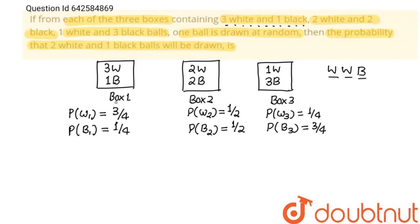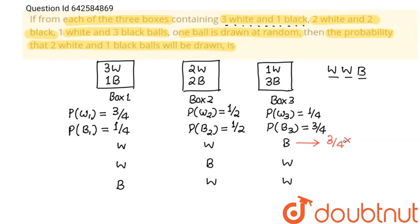We need two white balls and one black ball, so there are three possible cases: white from box one, white from box two, and black from box three; or white from box one, black from box two, and white from box three; or black from box one, white from box two, and white from box three.